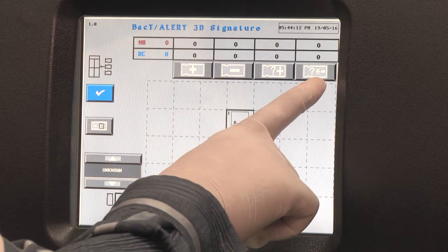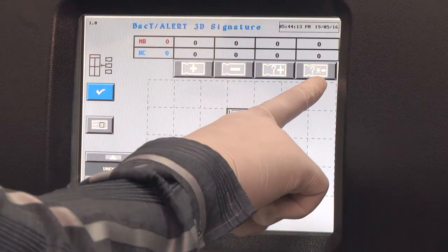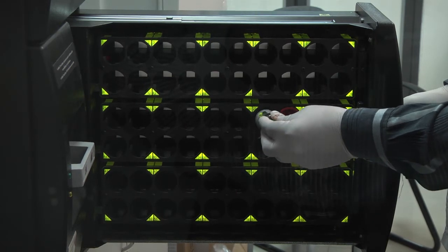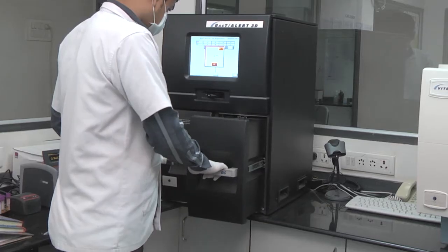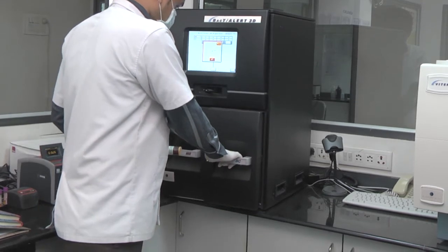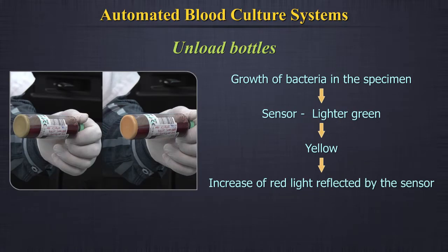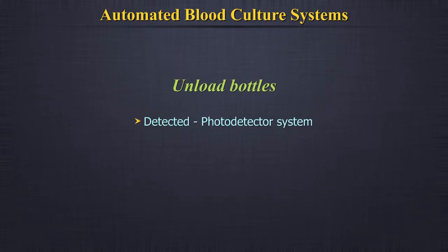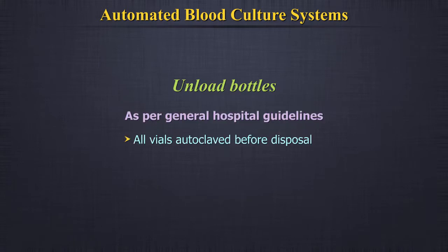To unload bottles, touch the unload bottle icon, whichever is highlighted. The cells which contain bottles to be unloaded will be flashing green light. Unload the bottle and close the drawer. Growth of bacteria in the specimen causes the sensor to become lighter green and eventually yellow, which results in an increase of red light reflected by the sensor and is detected by the photodetector system. All vials have to be autoclaved before disposal as per general hospital guidelines.